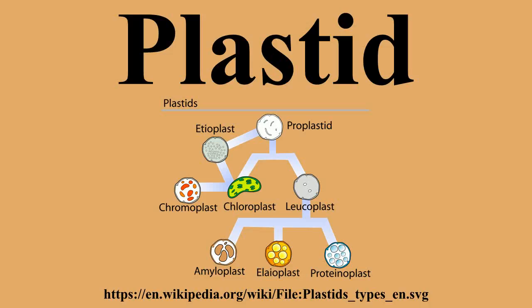The plastid is a major double membrane organelle found, among others, in the cells of plants and algae. Plastids are the site of manufacture and storage of important chemical compounds used by the cell. They often contain pigments used in photosynthesis, and the types of pigments present can change or determine the cell's color. They have a common evolutionary origin and possess a double-stranded DNA molecule that is circular, like that of prokaryotic cells.